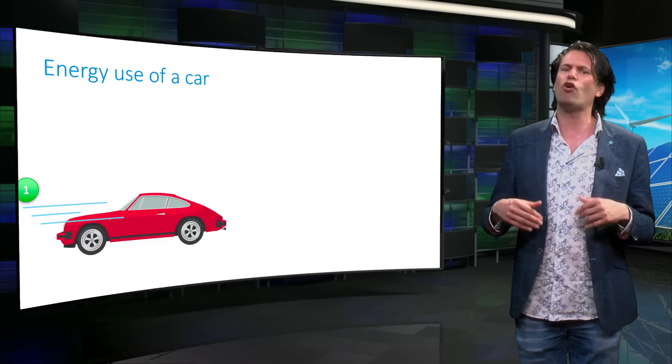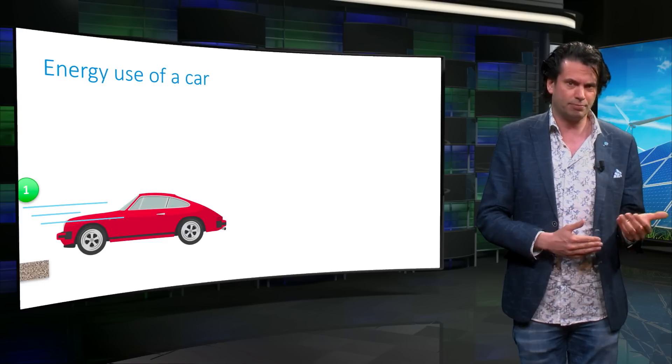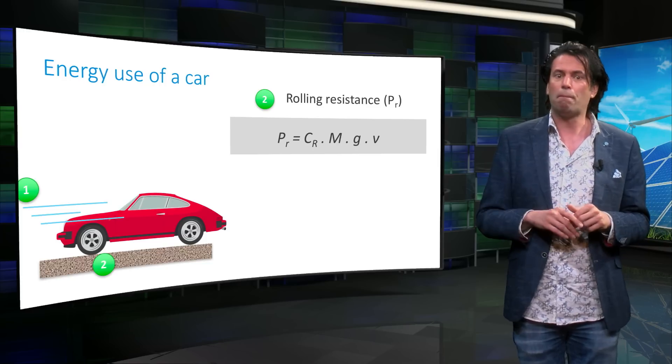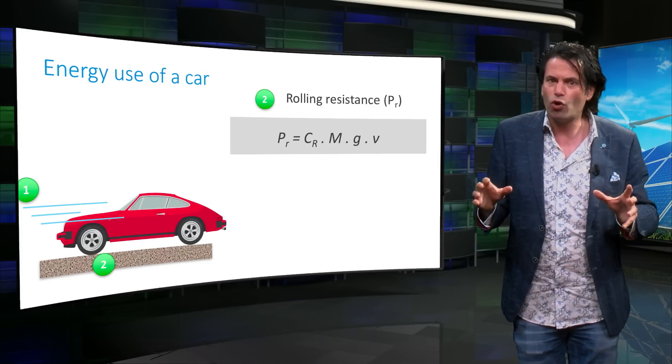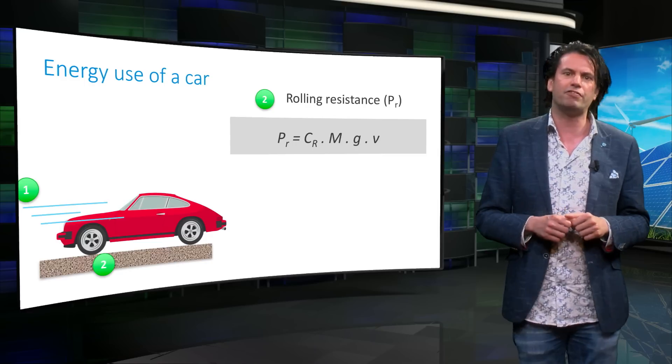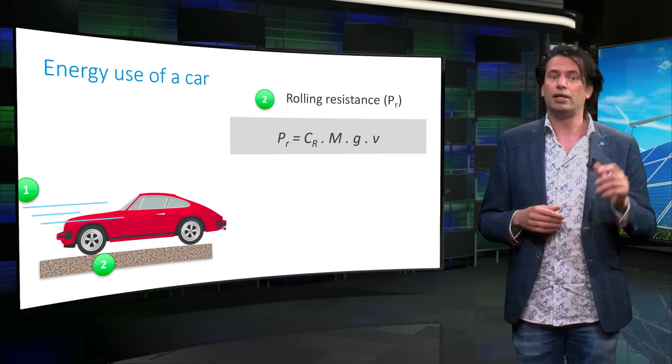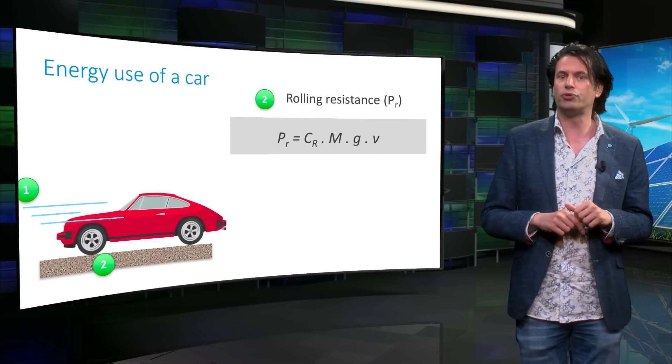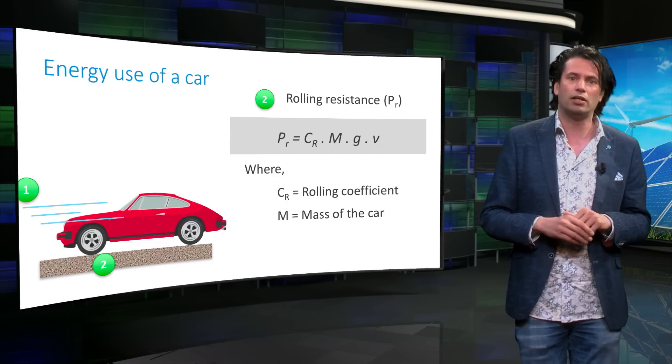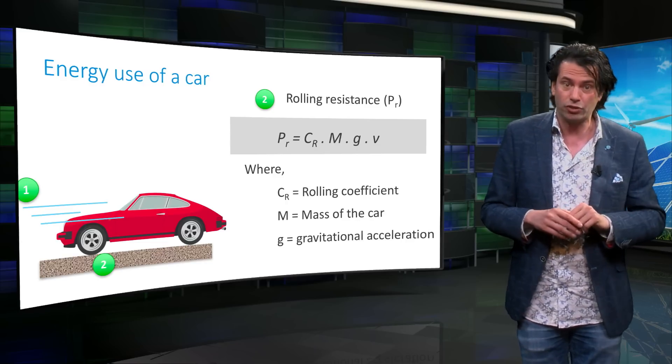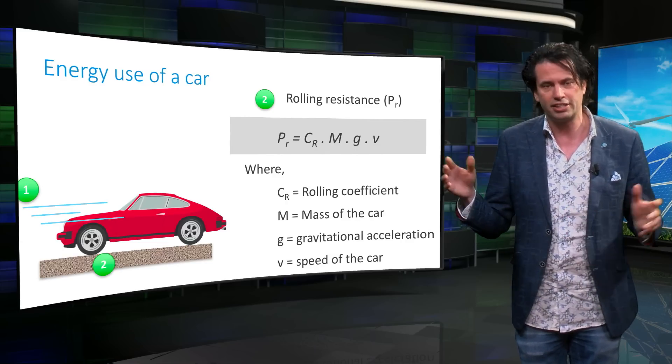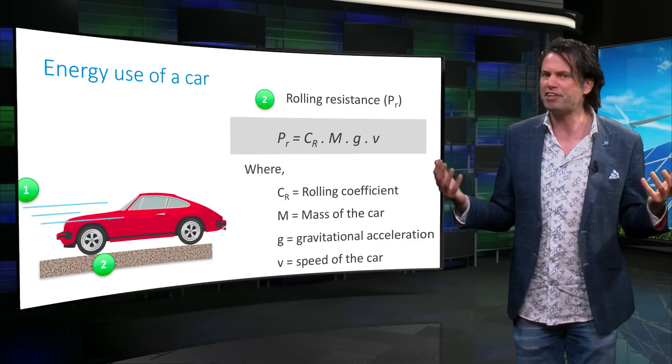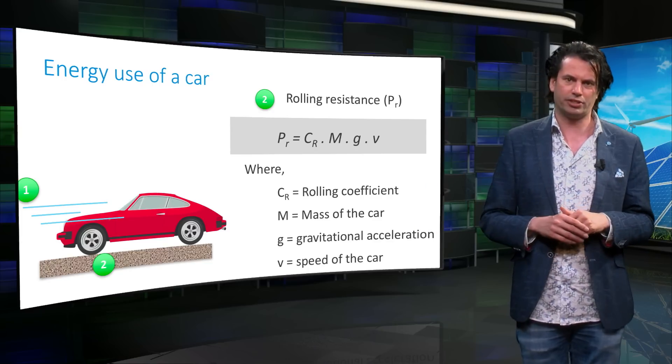The car also has to overcome friction between the road and its tires. This is known as the rolling resistance. The power, Pr, required to overcome the rolling resistance is given by Cr multiplied by M, G, and V. Cr is called the rolling coefficient, M is the mass of the car, G is the gravitational acceleration, and V is again the velocity. Naturally, larger or heavier cars will face a larger rolling resistance.